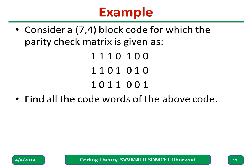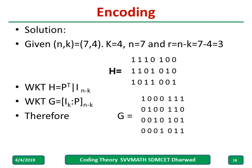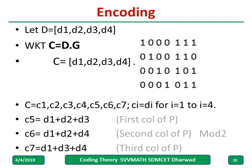Let us take an example to understand the whole concept. Consider a (7,4) code: n=7, k=4. The parity check matrix H is given; find all code words. We know H = [P^T | I] and G = [I | P]. So from H we can extract P^T, and taking its transpose gives us P. Once we have P, we write G = [I | P] — the identity matrix is known, so we simply append P. Then with G known, c = d·G.